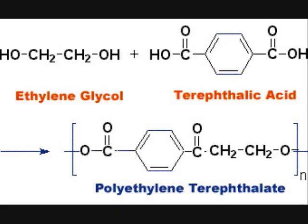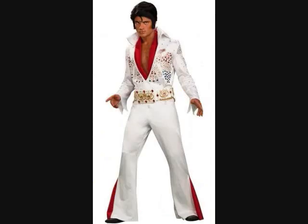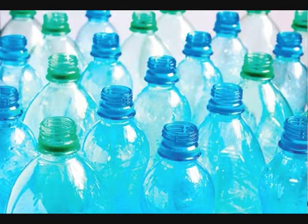Polyethylene terephthalate, or PET, is the most common polyester. Around 60% of it is used in the production of synthetic fibers, and 30% for plastic drink bottles.